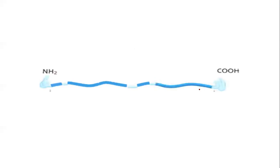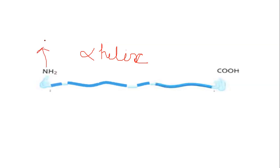What you see is that this is an alpha helix. And you know that every protein has got two ends. One is called the N-terminal end, and this is the carboxyl terminal, or it is called the C-terminal end. This is one subunit.